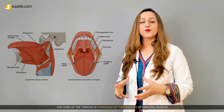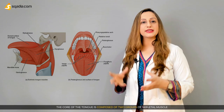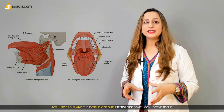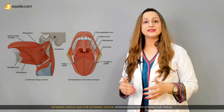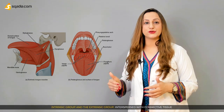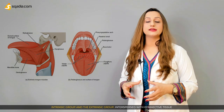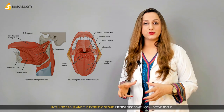The core of the tongue is composed of two groups of skeletal muscles — the intrinsic group and the extrinsic group — interspersed with connective tissue.